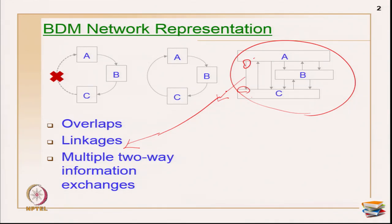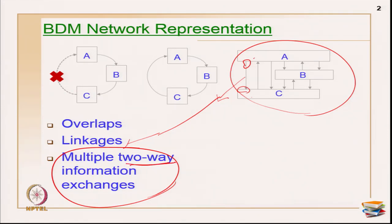If you want to give a proper definition for linkages — one is multiple: you can represent so many relationships or information exchanges among any two activities. Then it is also two-way: it is not like I am only having relationships in one direction. I could actually represent all the relationships between any two activities. I am actually having two-way communication flows — A can also give information to B, and B can also give information to A. So it is multiple and also two-way information exchanges.